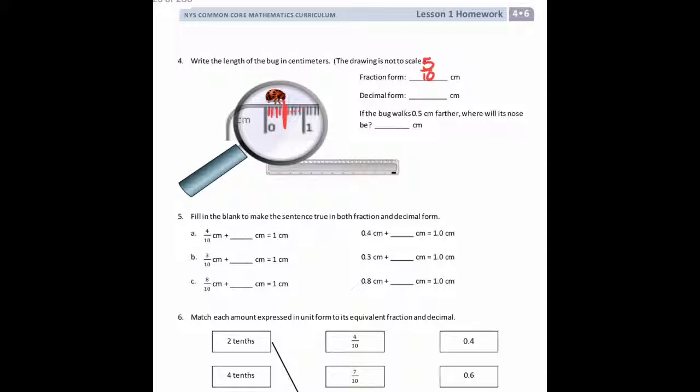So I'm going to say 5 tenths centimeters. As a decimal, that would be 0.5. And the last question says if the bug walks 0.5 centimeters further, where will its nose be? If I counted five spaces up, it would exactly be at 1 centimeter.